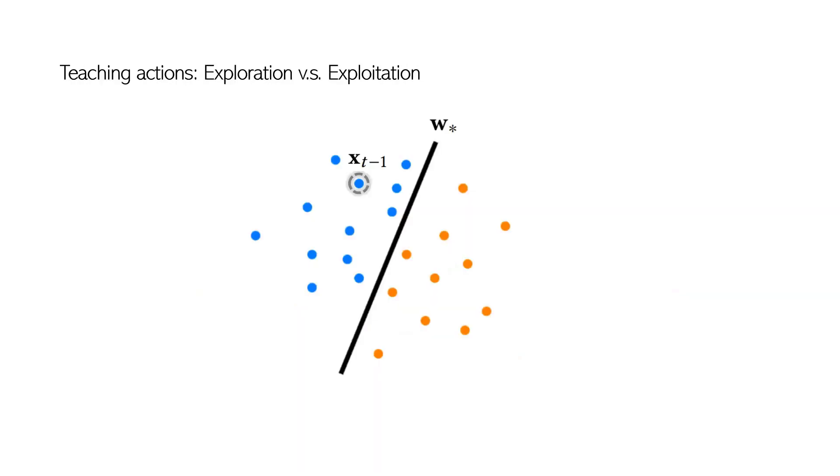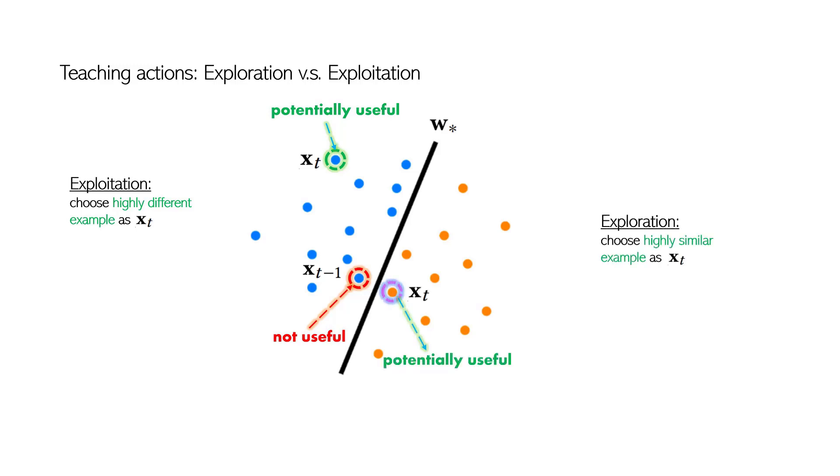Given the current teaching example x_t-1, if the next teaching example x_t has the same label as x_t-1, we call it an exploitation action. If x_t has a different label as x_t-1, we call it exploration. One nice property of JEDI shows that if x_t-1 is not a useful teaching example, then JEDI will select a highly different example x_t for exploitation. Or, JEDI will select a highly similar example x_t for exploration, because it is potentially more useful than other examples.